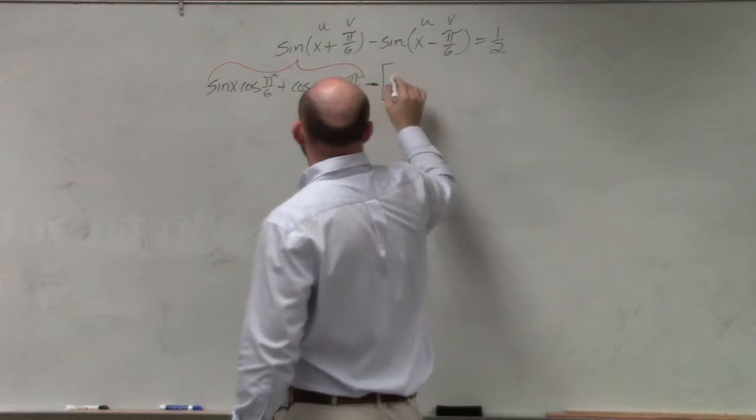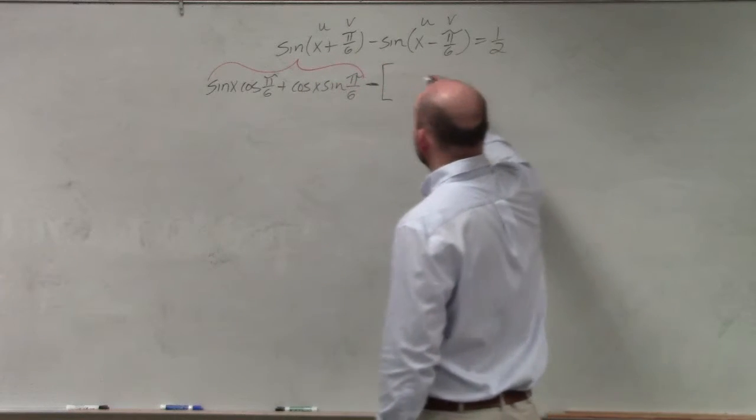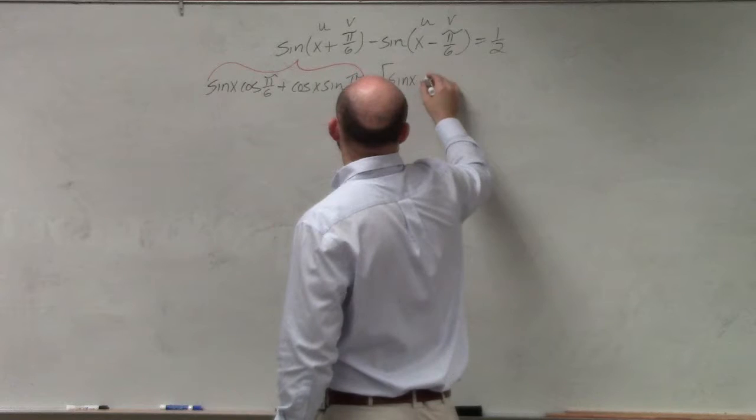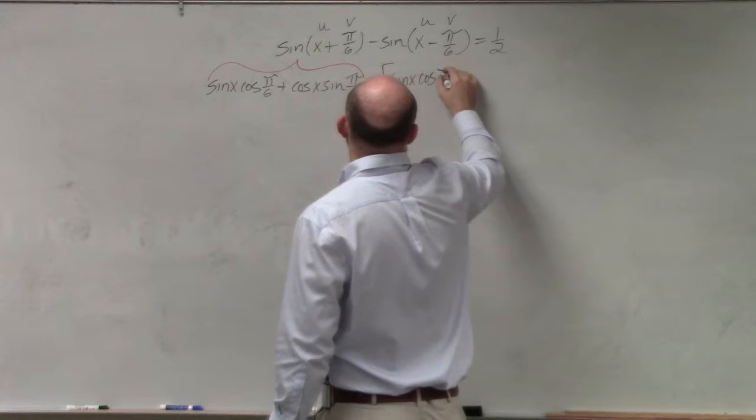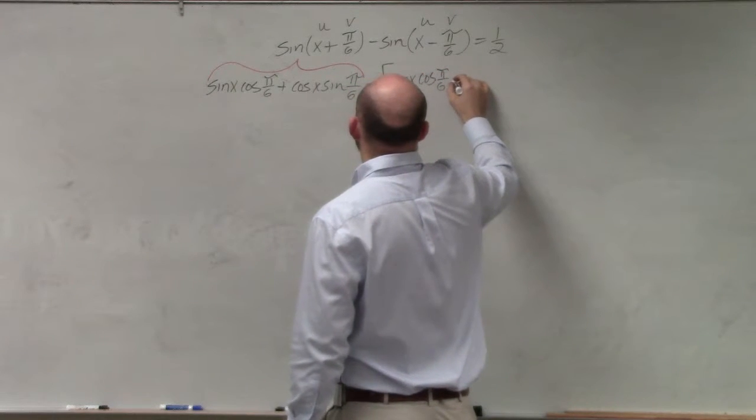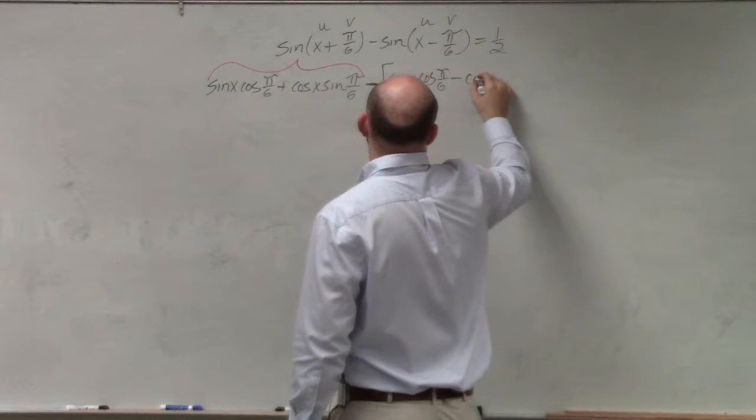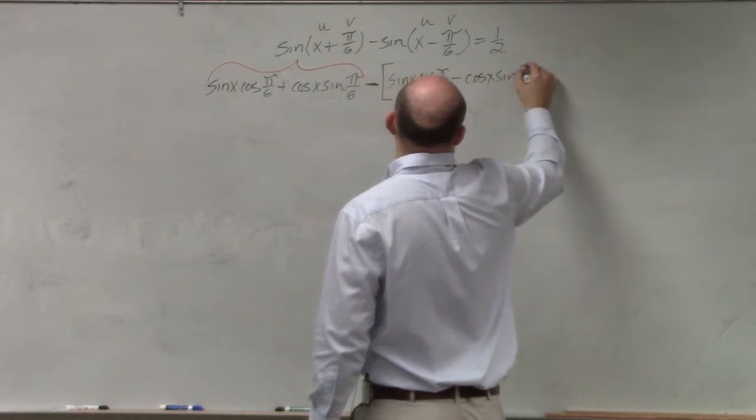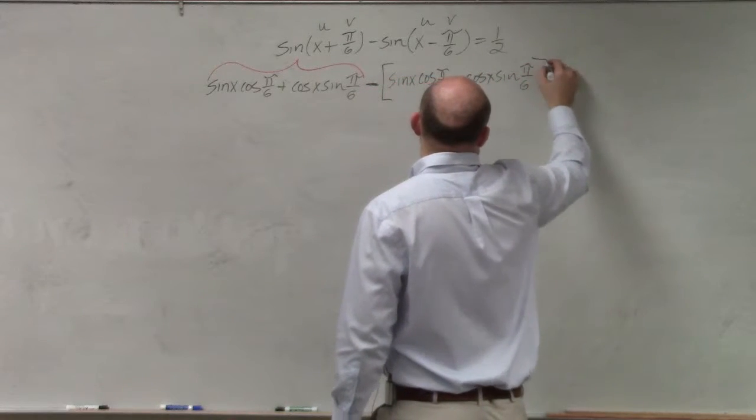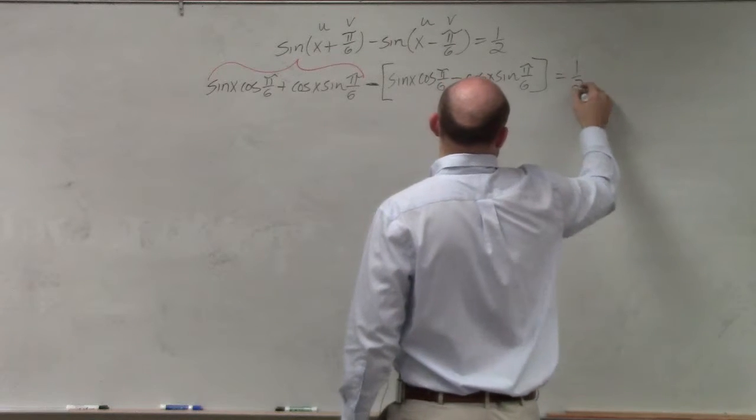Now I'm going to do the sum and difference here, which would be sine of x cosine of pi over 6 minus cosine of x sine of pi over 6, and brackets equals 1 half.